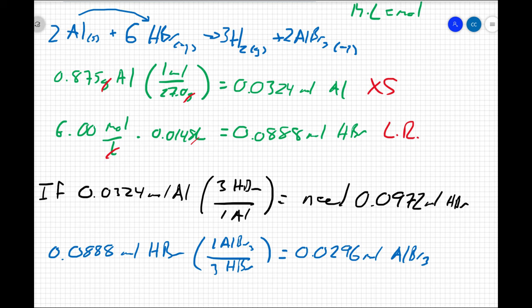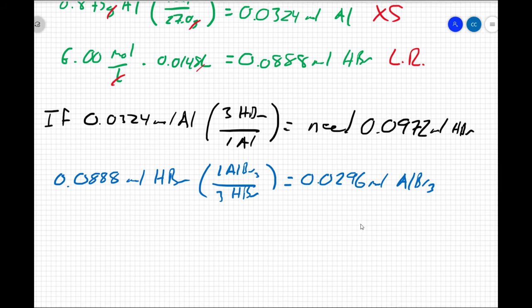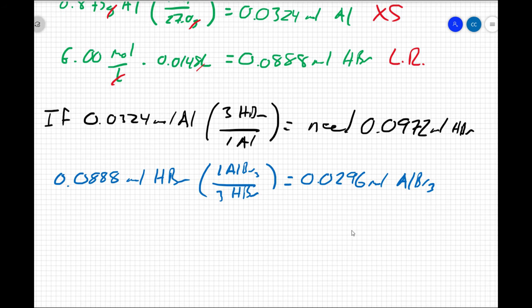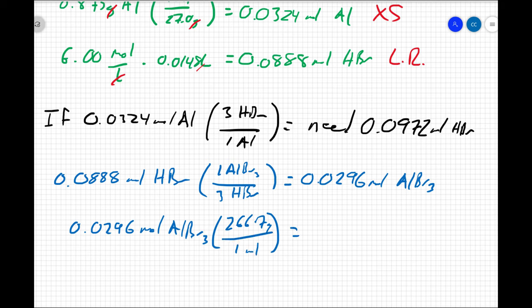And the question asks for mass, however. So the last thing we're going to do is we're going to convert this to grams. I can take my 0.0296 moles of aluminum bromide, and multiply it by the molar mass, which is 266.7 grams for every 1 mole. So if I multiply that by my number of moles, I can cancel out my moles here, and I get an answer of 7.89 grams of aluminum bromide.